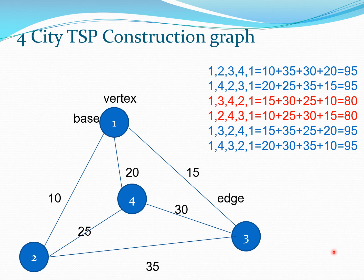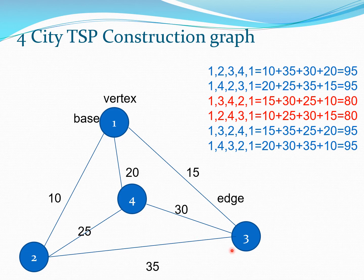Let us look at a very simple example of the traveling salesman problem with four cities: 1, 2, 3, and 4. The distances between each pair of cities are given: distance between 1 and 2 is 10, between 2 and 4 is 25, between 1 and 4 is 20, between 1 and 3 is 15, between 4 and 3 is 30, and between 2 and 3 is 35.